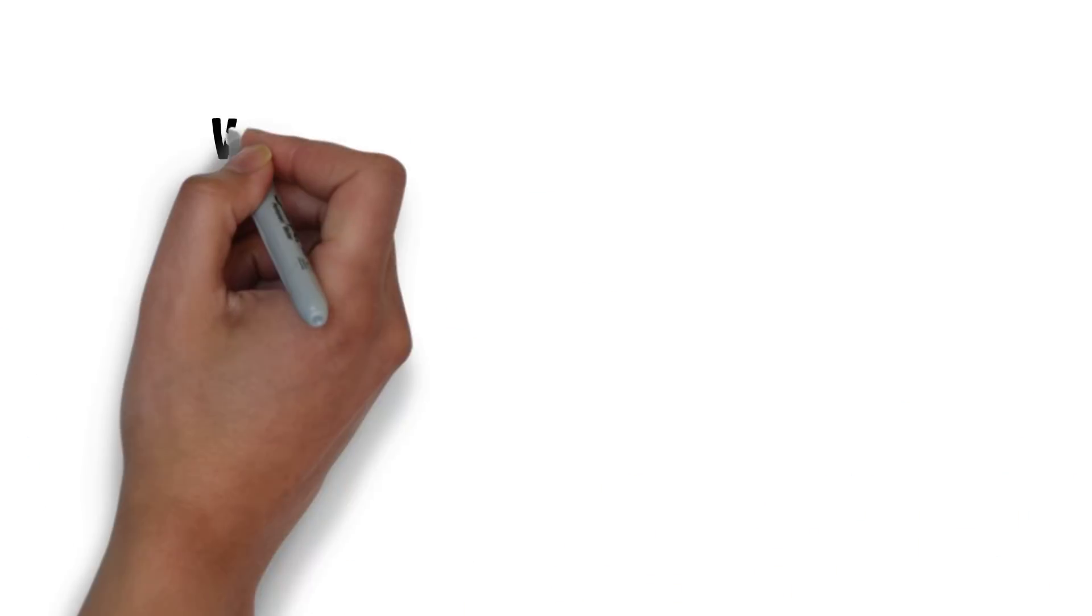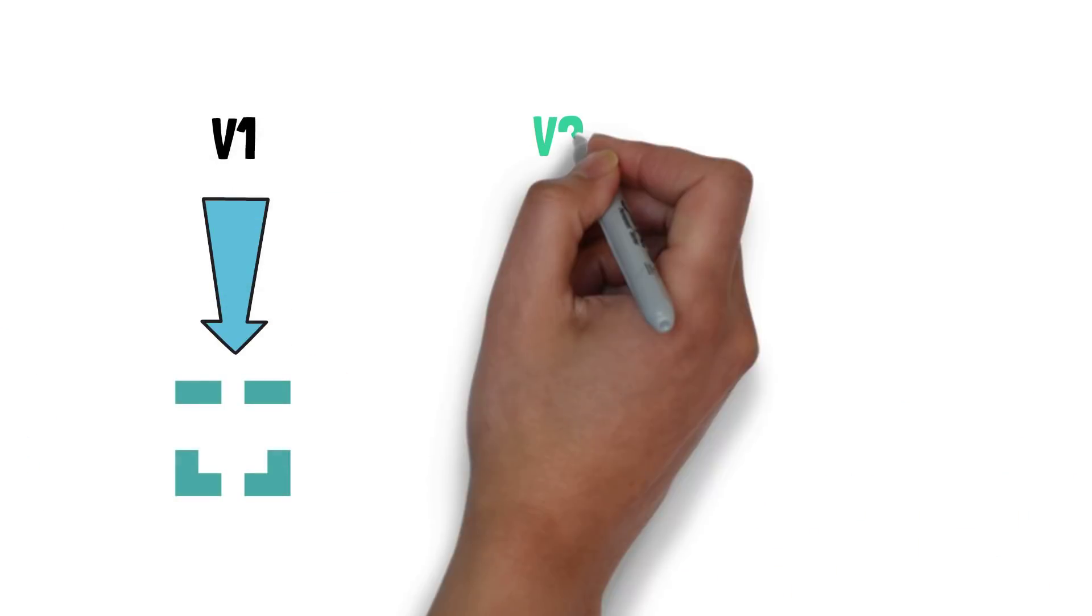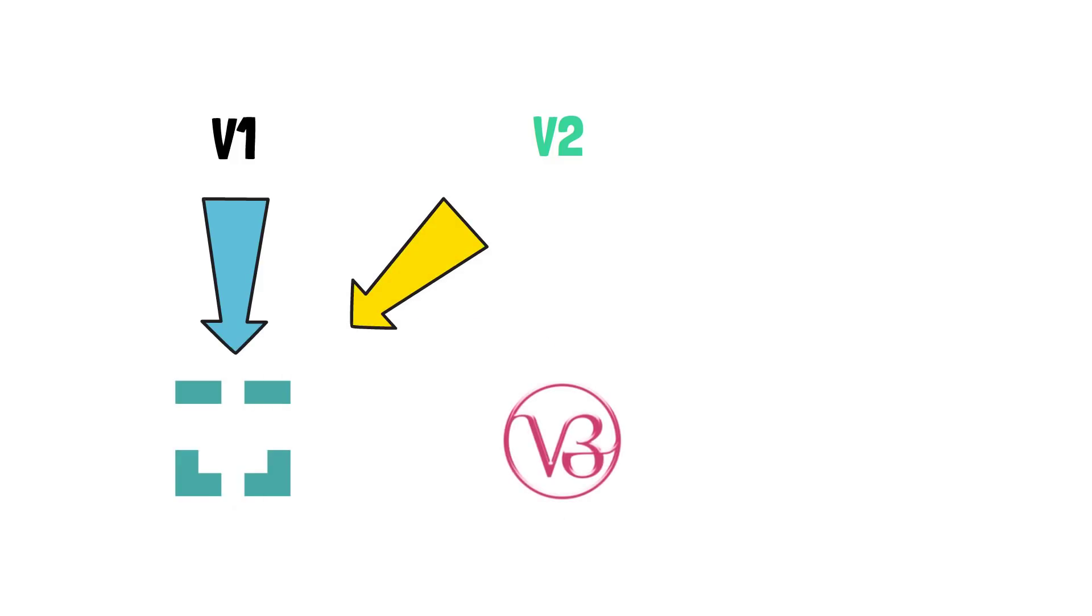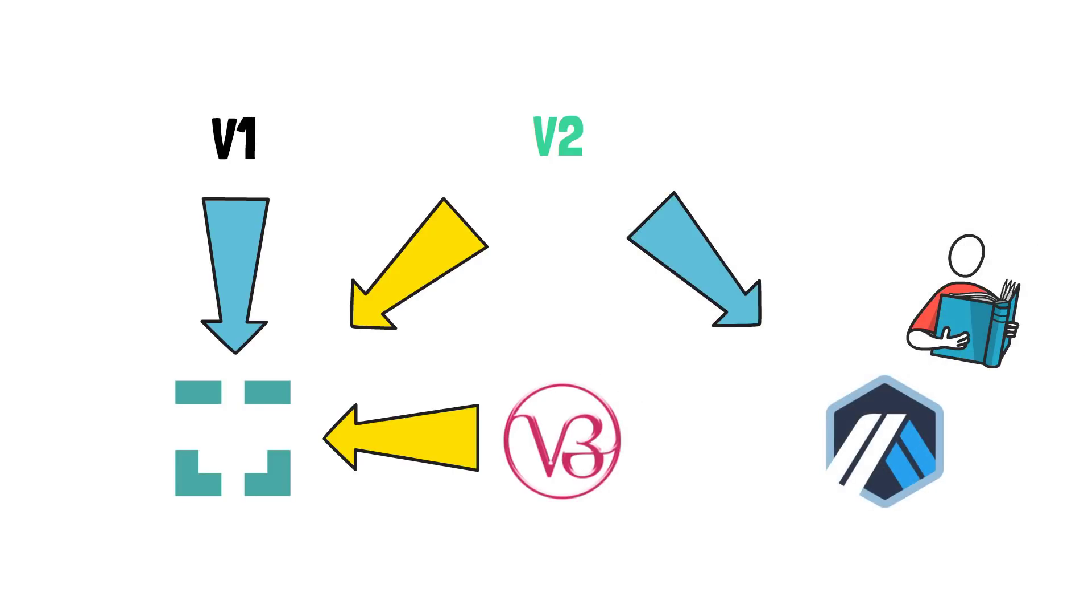V1 will remain on XDAI. V2 can also launch on XDAI if Uniswap V3 also launches there. Perpetual is also planning on launching on Arbitrum in the near future. If you'd like to learn more about roll-ups, you can watch my video about this topic here.